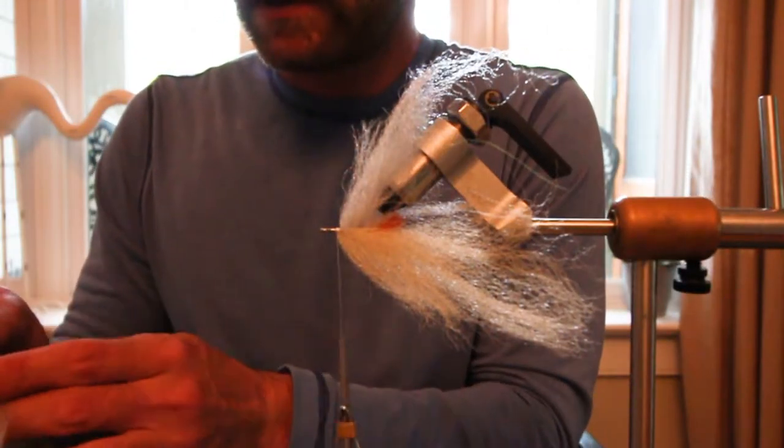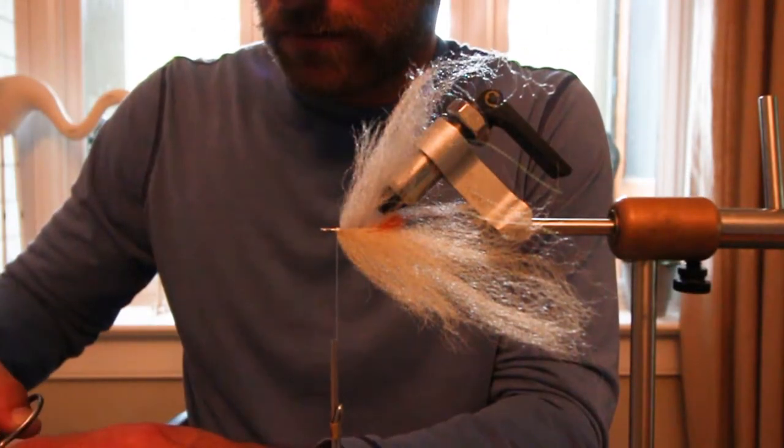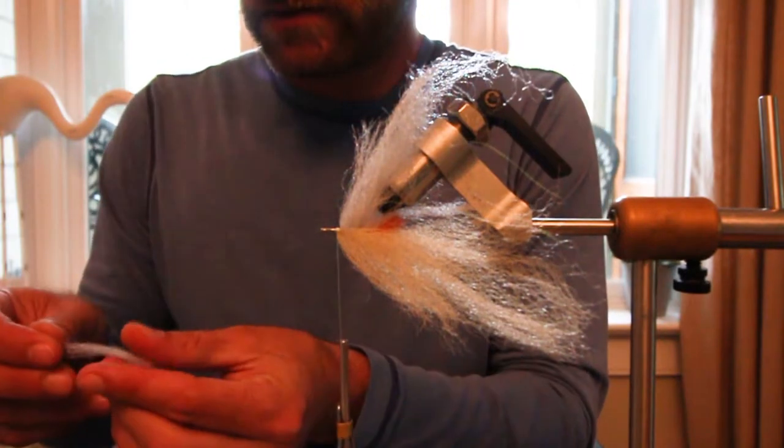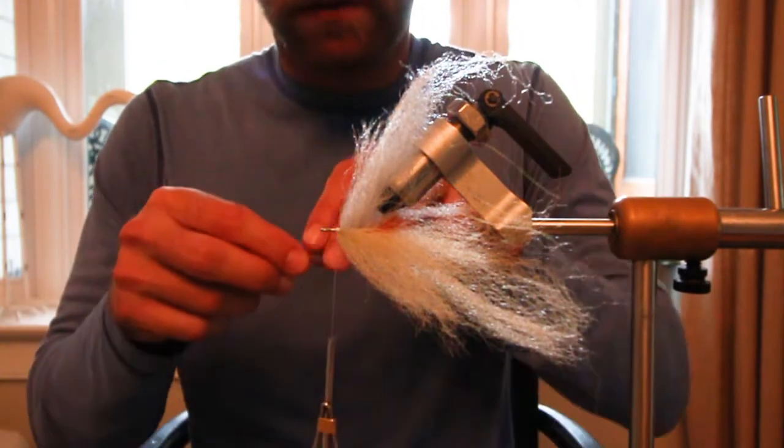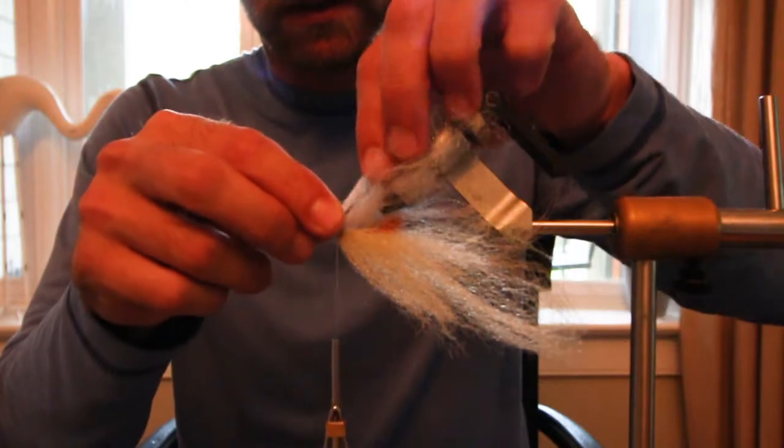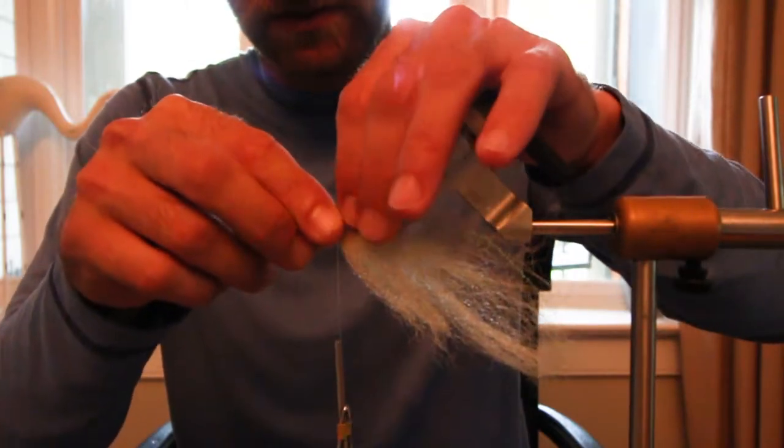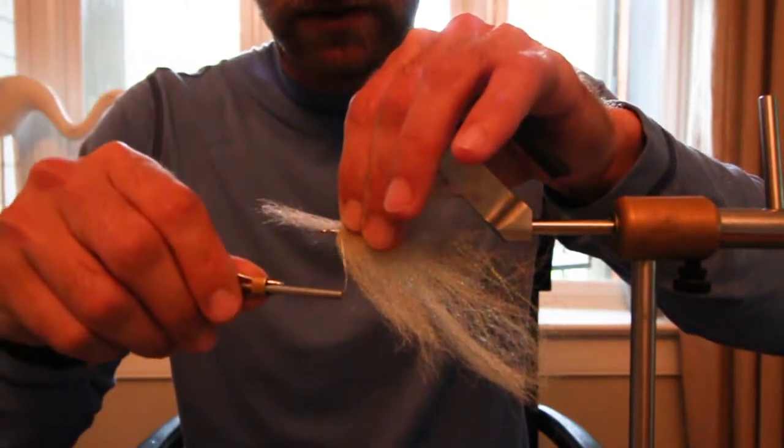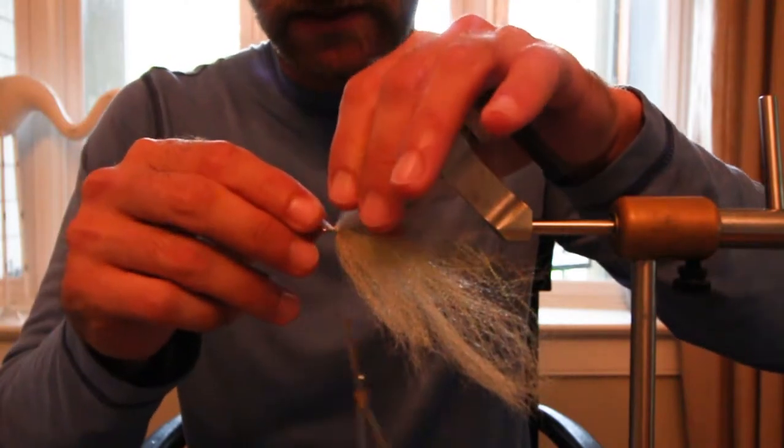As we get very close to the eye, we'll go pretty short with our EP fibers. Not worrying about the taper so much at this length, but you do still want to make sure you're getting it spread on both sides of the shank.